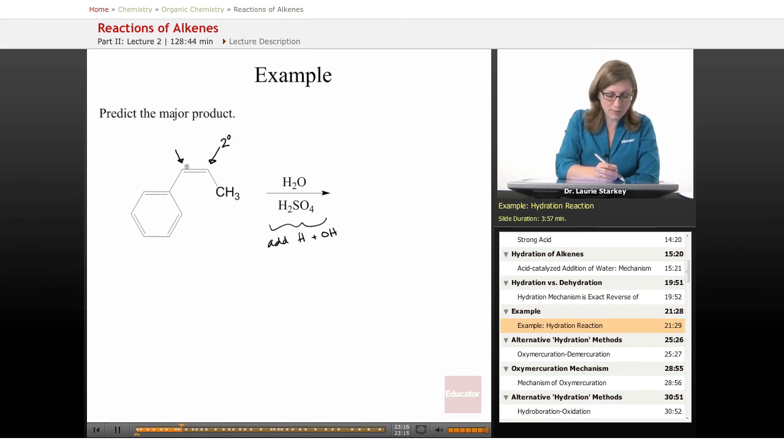How about if we had the carbocation in this position? It's also secondary. So again, we're seeing that we have very similar situation. But this is not just secondary. We have this benzene ring here. And what do we call the position that's next to a benzene ring? We describe that as benzylic. So the carbocation in this position would be secondary and benzylic. That's better than just being secondary.